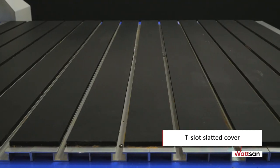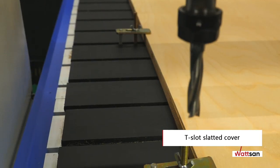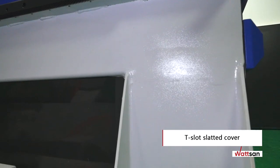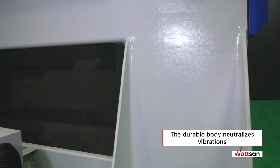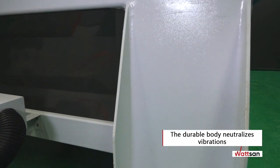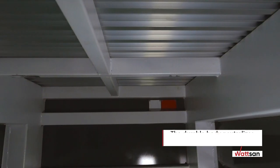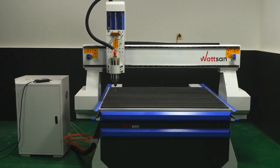The table has a T-slot slatted cover. It is possible to install a vacuum table. The eight to ten millimeter thick welded steel profile frame is reinforced by additional center crossbars. The milling weighs 680 kilograms.